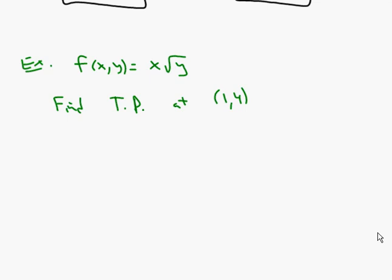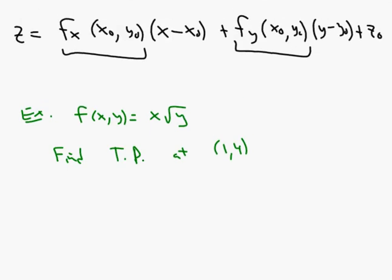We think about our tangent plane equation and we need our partial derivatives. f sub x: if x is the variable, then the square root of y is just like a constant in front. Think of it like 5x — the derivative of 5x is just 5. So the derivative of x times the square root of y is just the square root of y.